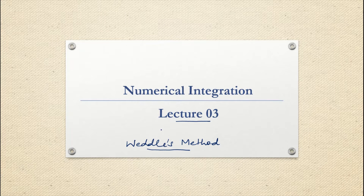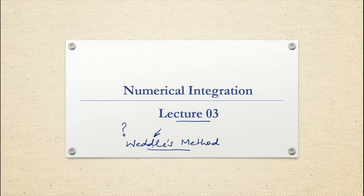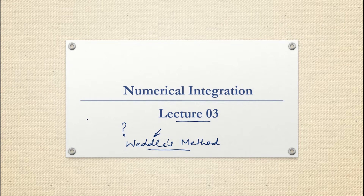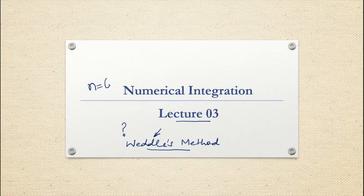One question is: if we already have Simpson's one-third rule and Simpson's three-eighth rule, what is the need of Weddle's method? Why should we integrate using Weddle's method? Weddle's method is the most accurate method. In day-to-day problems we generally prefer to use Weddle's method for numerical integration when those integrations are not possible using the analytical method. Weddle's method is applicable when the given data can be partitioned into six equal parts or a multiple of six equal parts.